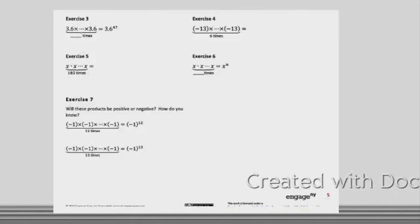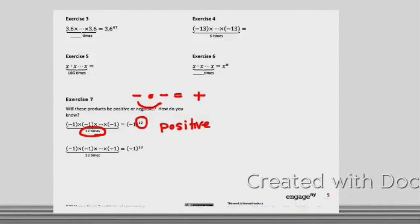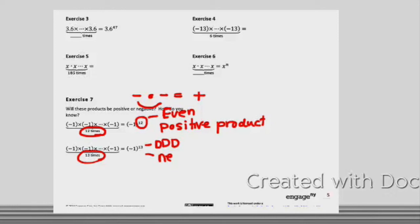We need to remember the rule that a negative times a negative gives us a positive product. We're really looking at how many times we're incorporating that negative — each time our negatives pair up, we get a positive product. So if we have the power of 12, we end up with a positive answer, because that power is an even number, giving us an even number of negatives. If we have negative one as a factor 13 times, that is an odd number of negatives, and we end up with a negative product.